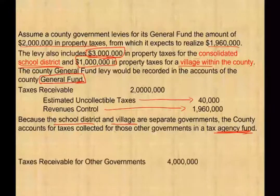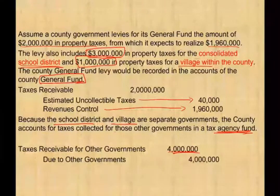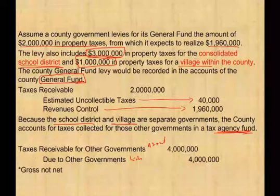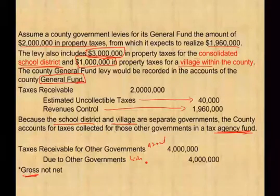Now we do the first entry for the tax agency fund. We expect $3 million plus $1 million — $4 million total. We debit taxes receivable for other government $4 million, and credit due to other government — a liability — for $4 million. So we debited an asset of $4 million and credited a liability for $4 million. Notice that for the other agencies, we debit the gross amount — we attempt to collect the full amount — although for our own taxes we only expect $1,960,000. Assets equal liabilities.